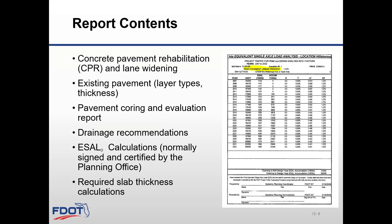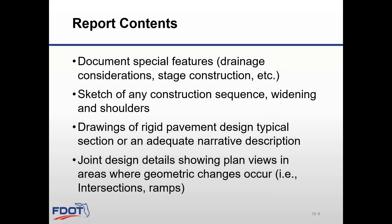Include required slab thickness data calculations. Some additional details to include in the report are any special features such as drainage considerations, staged construction, concrete pavement next to walls for footing details, any approach slabs or pavement transitions. Provide sketches of construction sequence, widening, and shoulders. The report should also include drawings of the rigid pavement typical section with a narrative, and any joint details for areas where geometric changes occur such as intersections and ramps.